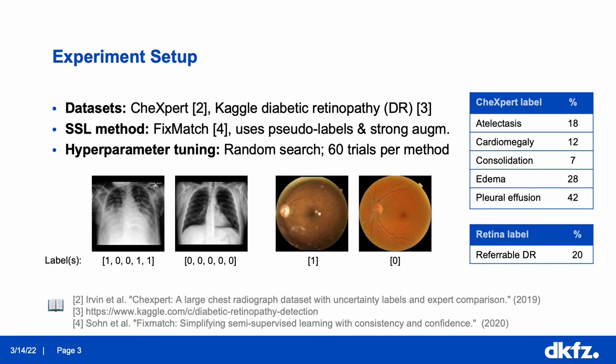Our goal was to explore these two points on a state-of-the-art semi-supervised learning method, and for that we used the following setup. Experiments were performed on datasets of chest x-rays and retina images. As you can see on the right, both tasks include class imbalance. We then trained deep neural networks on both datasets and used the FixedMatch algorithm for semi-supervised learning. To enable a fair comparison between supervised only and semi-supervised methods, we tuned hyperparameters with the same budget for both methods.